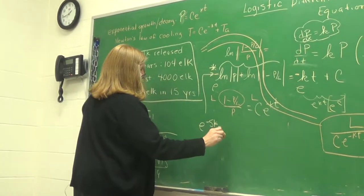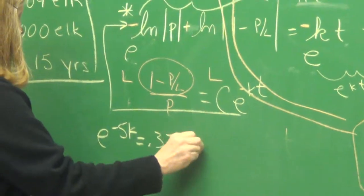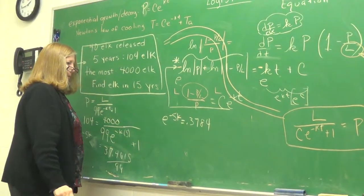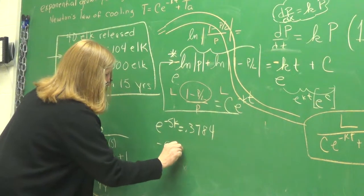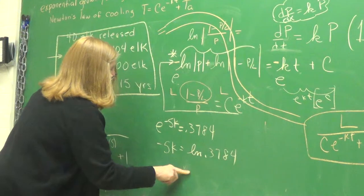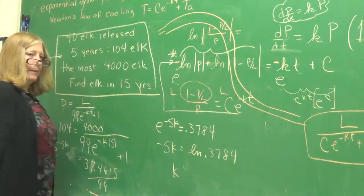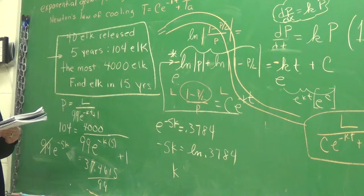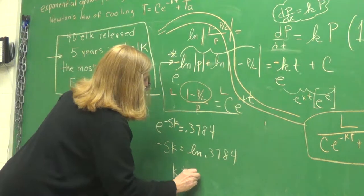Equals what? 0.3784. All right, go ahead. I'll add it both sides. Negative 5K equals LN of 0.3784. So just go ahead and take whatever the LN is about and divide it by minus 5. I got 0.1944.